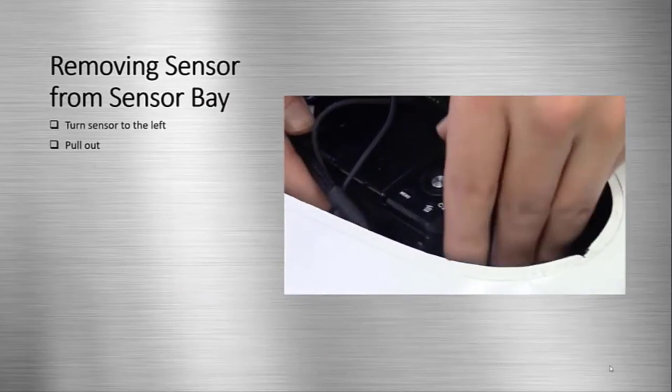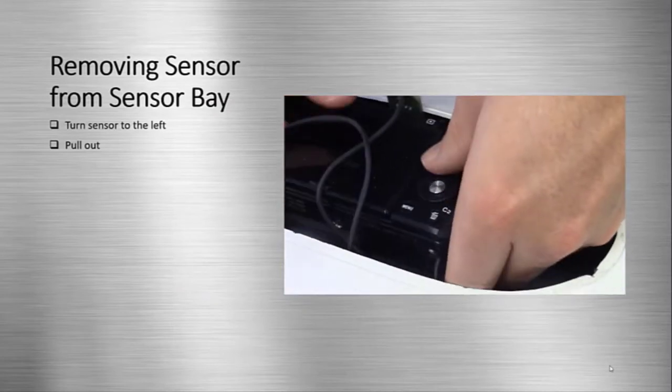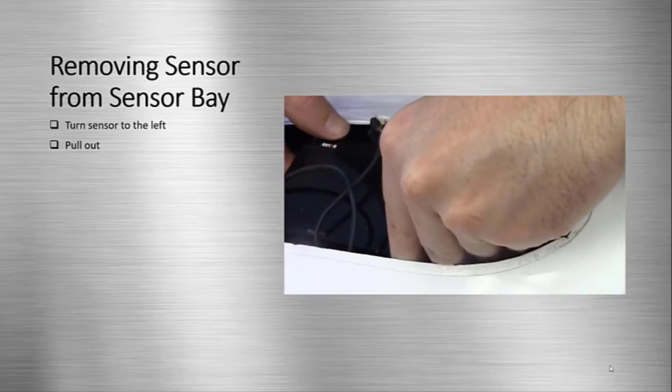Now we will take the sensor and sensor seat out of the sensor bay. To do this, turn the sensor to the left and pull it out as displayed in the video on this slide.